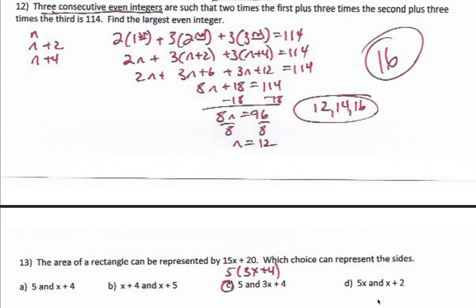Three consecutive even integers are such that two times the first plus three times the second plus three times the third is 114. The three consecutive even integers are n, n plus two, and n plus four. Remember, the setup for consecutive even and the setup for consecutive odd is the same.